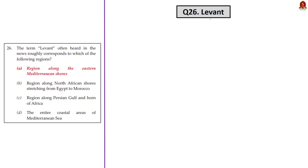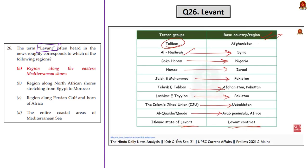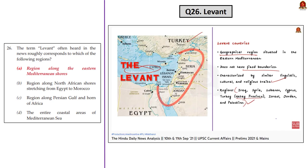Question 26 asks what the term 'Levant' means. We discussed Levant in our 11th September 2021 analysis, where we saw the Islamic State of Levant and clearly noted that Levant denotes a vast geographical region situated in the eastern Mediterranean. So the correct answer is option A. Those who listened to this discussion could have easily attempted this question.